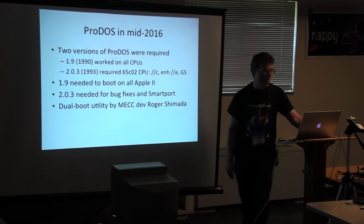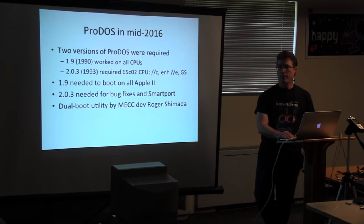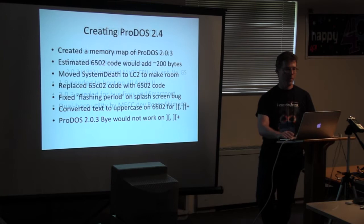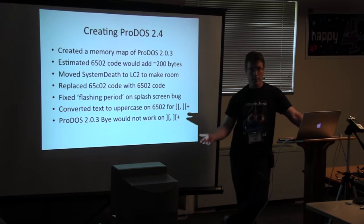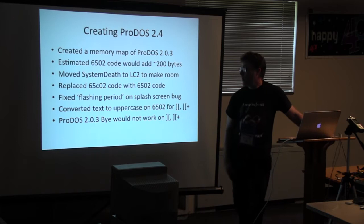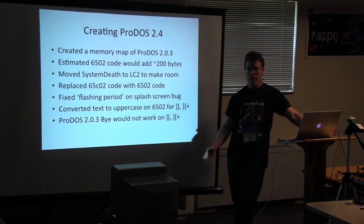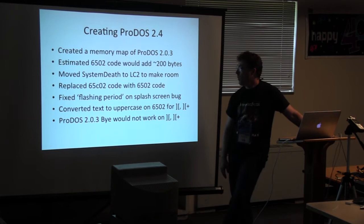On Usenet we had a big discussion, and I could tell someone was going to volunteer — because I said I think we should just fix ProDOS. So it was off to try to fix ProDOS. The first step was to create a memory map, because 6502 code takes more space than 65C02, which is why Apple split it in the first place — they ran out of space in ProDOS. I estimated that the 6502 code would add about 200 bytes, so we needed to find 200 bytes and ProDOS would no longer be fractured into two different camps.